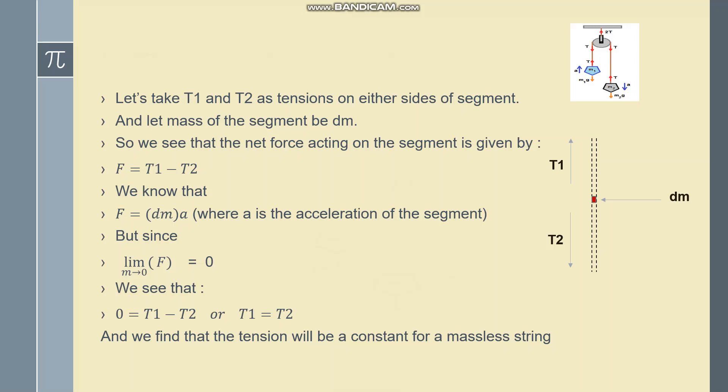In a practical case, the mass of string or a rope is never 0. But we would often say that the mass of string is much less than the rest of the mass we are dealing with in the system. So it is a valid assumption to assume that the string is massless and therefore the tension is constant.